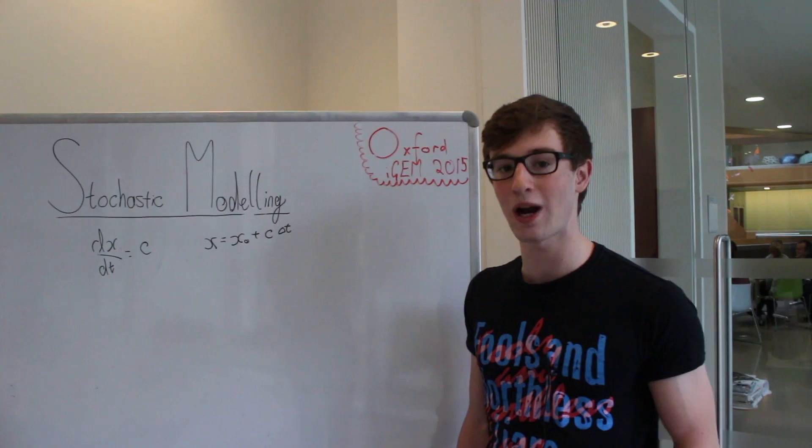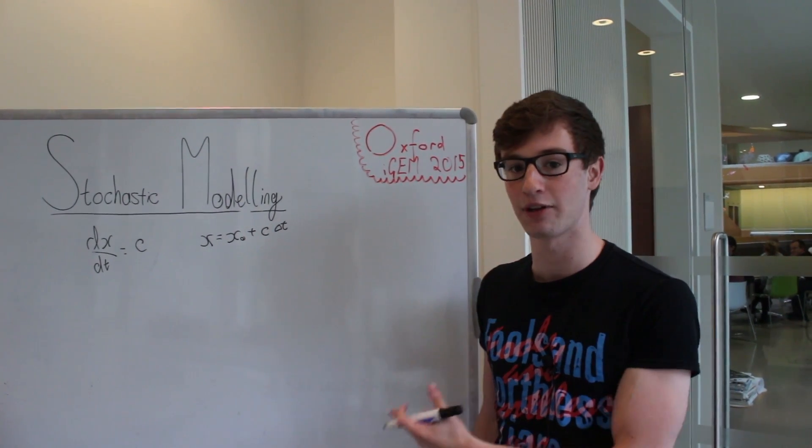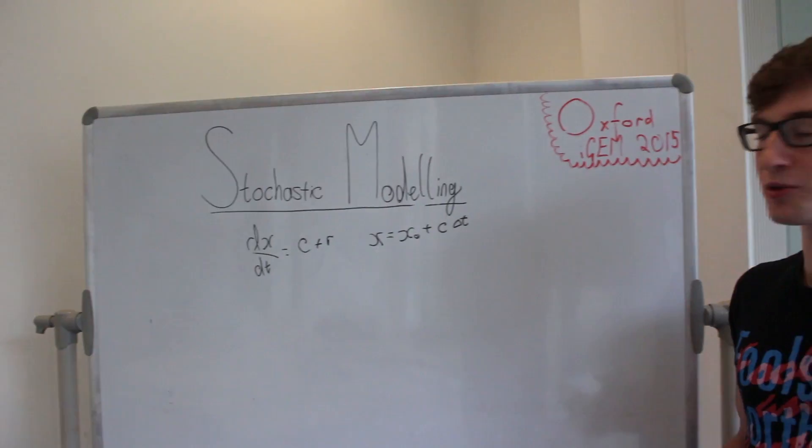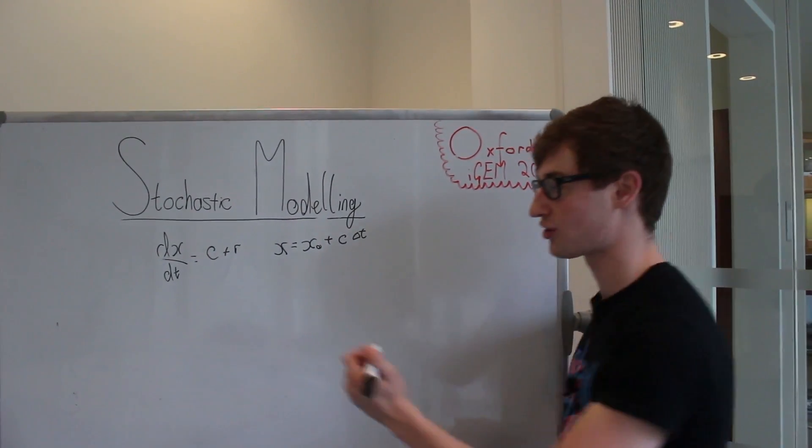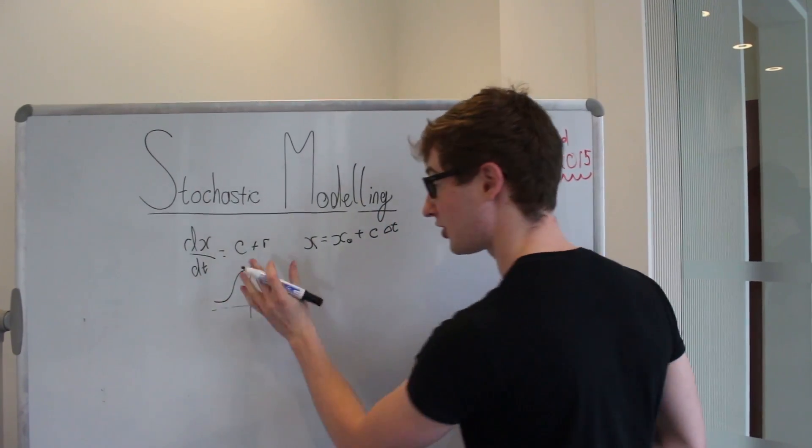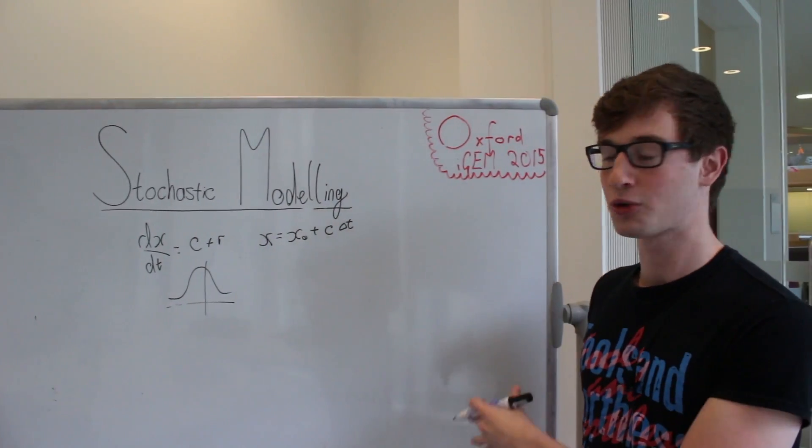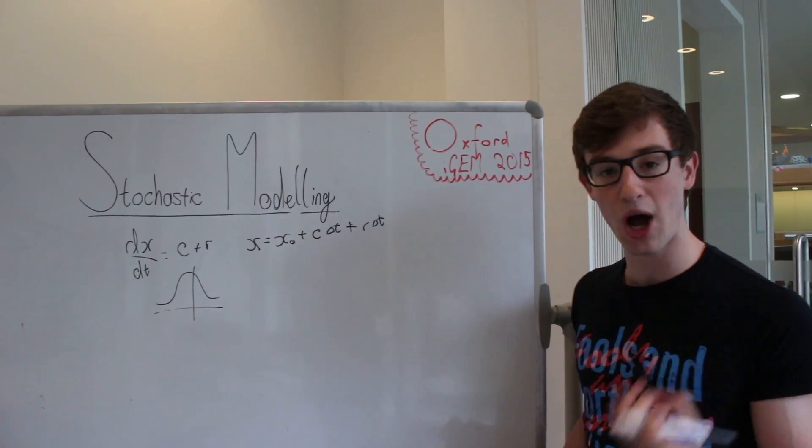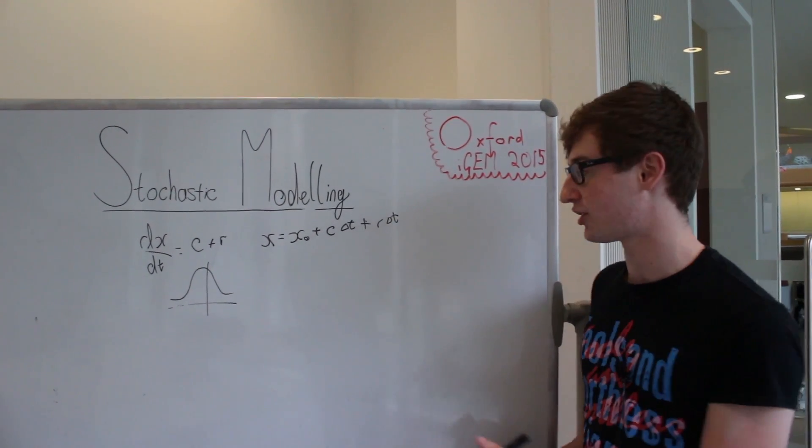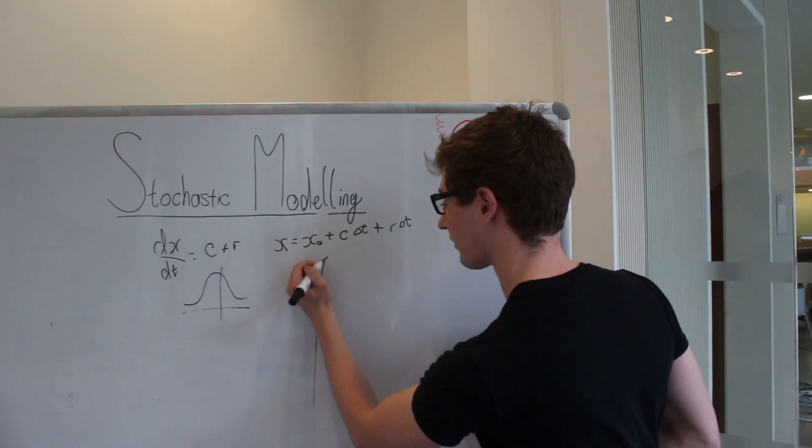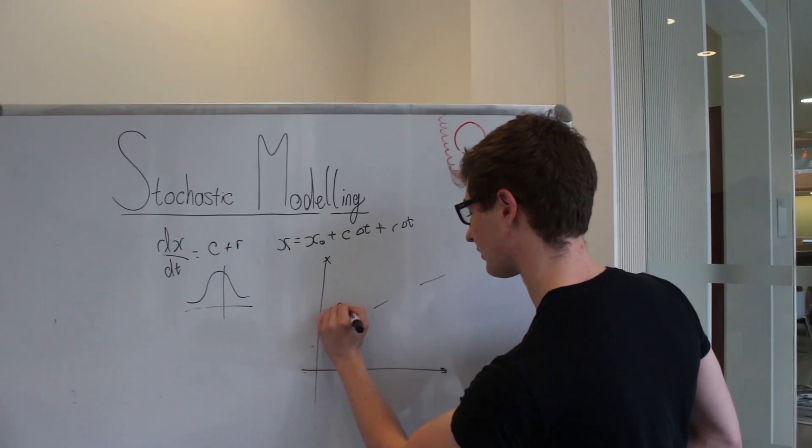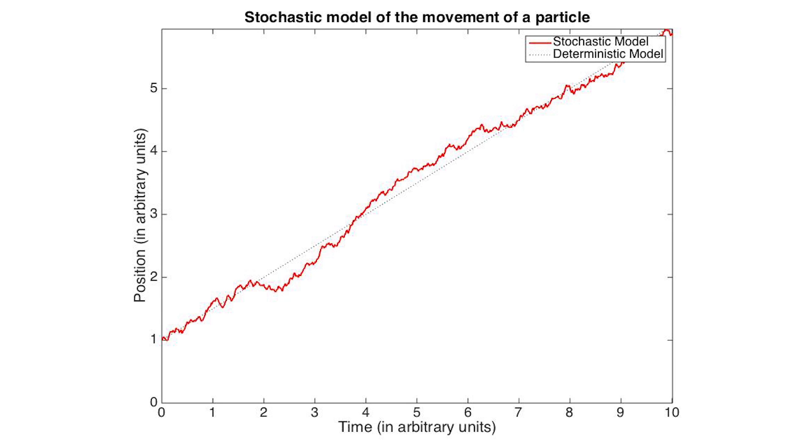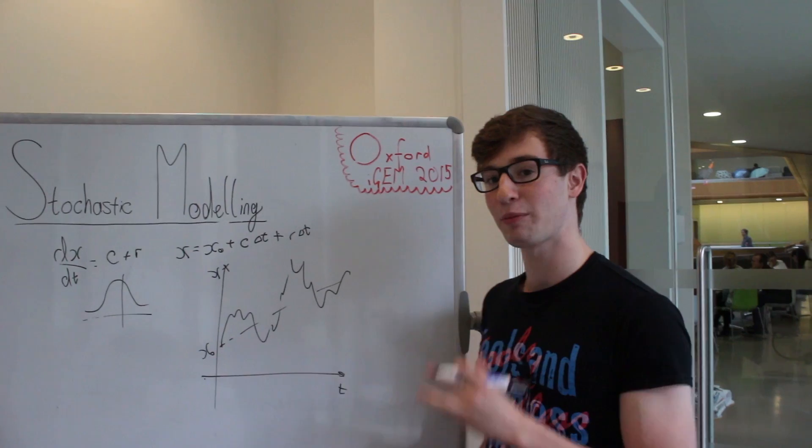The simplest way to introduce a random element into our system to turn it into a stochastic model is just to add a random number into the equation. So dx/dt is c plus r, where we would say r is a randomly distributed number, normally distributed about zero. So the distribution of r would look something like this, and of course this would add a term r dt into our solution. Every time step we would compute a new random number r and add some number r dt onto our position, some number c dt onto our position, and we would get some kind of result looking a little bit like this. This is position, this is time.